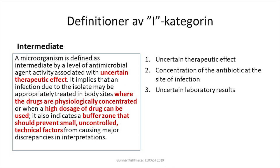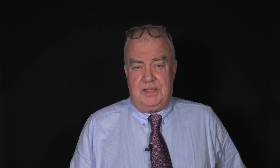What it doesn't do is tell the clinician who receives an I as to which of these is valid in this particular case. So in our experience, many clinicians do not really know what to do with an I. And there are numerous jokes about what I might stand for. We want susceptibility testing to be respected. You can joke about other things — but uncertain therapeutic effect? That's EUCAST's responsibility.